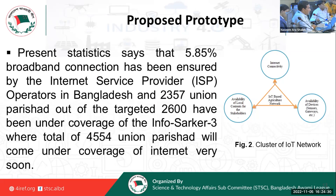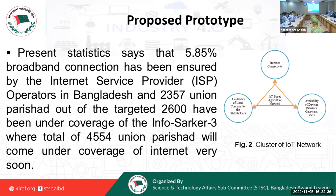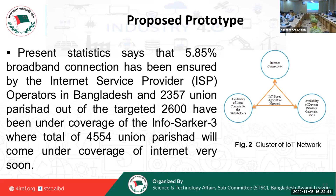Present statistics say that 5.85% broadband connection has been ensured by internet service providers and operators in Bangladesh, and 2,357 union parishads out of a targeted 6,000 have been covered. A total of 4,554 union parishads will come under internet coverage very soon. This is our targeted area, and since we are implementing an IoT system, internet connectivity is a must.